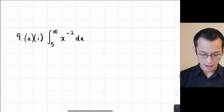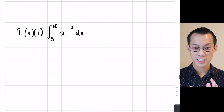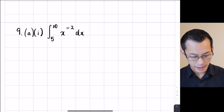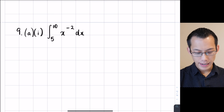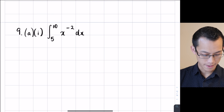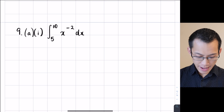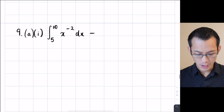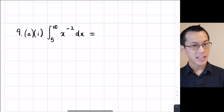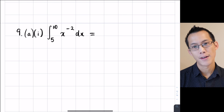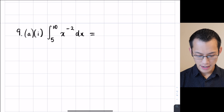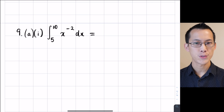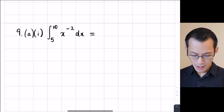Let's do one final worked example together. I'm going to skip a big chunk of the exercise and go straight to 9a part 1. I've picked out this one — you might be able to guess why — because again you've got these negative numbers flying around and they're easy to muck up. So I've got x to the power of negative 2, that's the thing that I'm integrating.